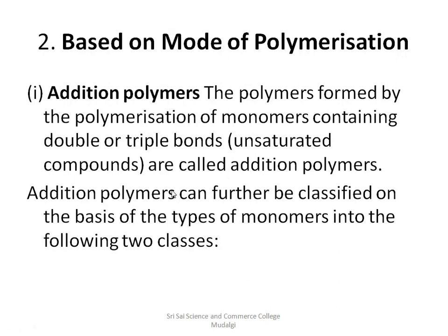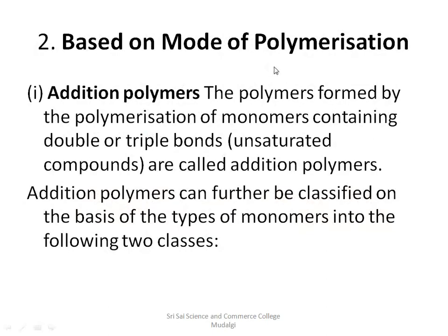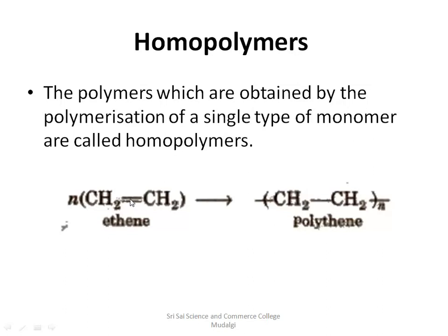Under addition polymerization, the first subtype is homopolymers, where 'homo' refers to similar. Homopolymers are obtained by polymerization of a single type of monomer. Since the monomer units are all the same type — for example, ethene units joined together to form polyethene — there is no other unit joining with it. When only one type of monomer unit is present, we call it a homopolymer.